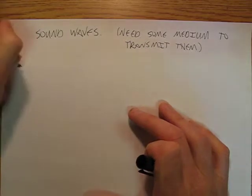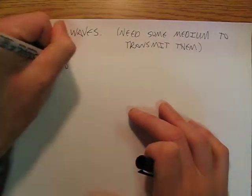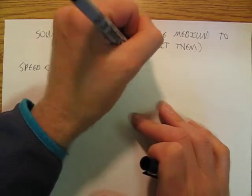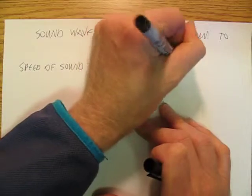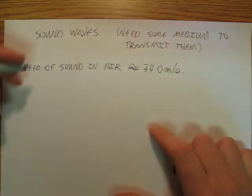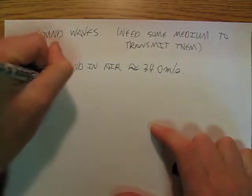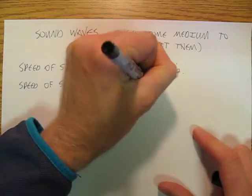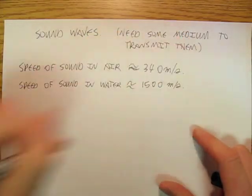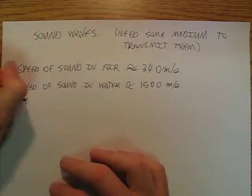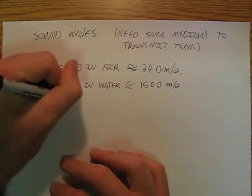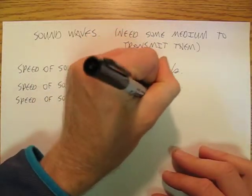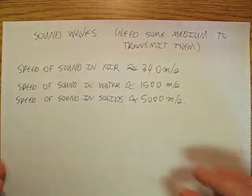The speed of sound in air is approximately 340 meters per second. The speed of sound in water is approximately 5 times that. And then the speed of sound in solids really depends on what the solid is, but it's substantially higher — up to around 5,000 meters per second.